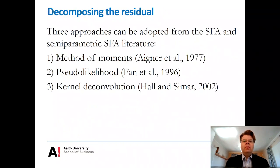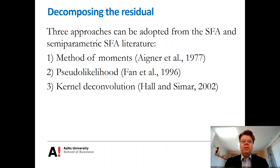For estimating the parameters of the inefficiency distribution, there are three different approaches we can adopt, using classic SFA approaches or extensions towards more semi-parametric modeling in SFA. The first approach is already applied in the classic Aigner-Lovell-Schmidt study that proposed the stochastic frontier model — this is referred to as the method of moments estimator. The second alternative is pseudo-likelihood estimation proposed by Fanli and Wersink in 1996, from the semi-parametric SFA literature. The third alternative is fully non-parametric, based on kernel deconvolution, proposed by Peter Hall and Leopold Seymar in 2002.